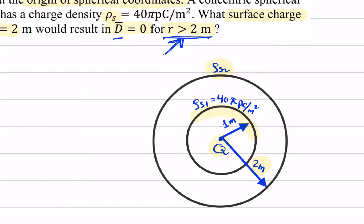We'll find the value of D at this region and set it equal to zero to find the value of ρ_s2 that causes D in this region to equal zero.